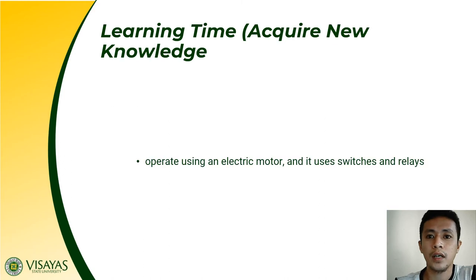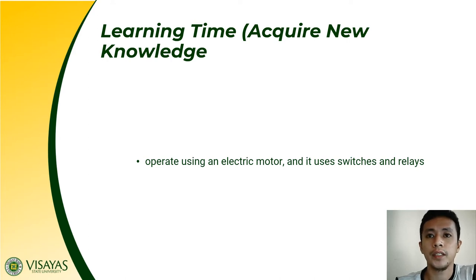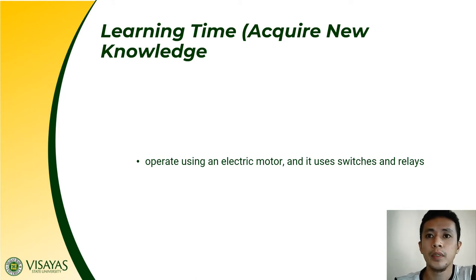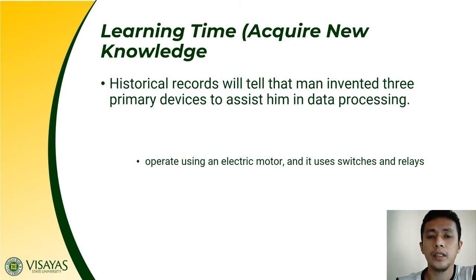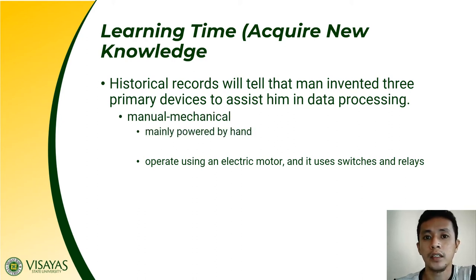Now let us start with our discussion proper. Studying the history of a computer is extremely useful in evaluating the impact and leading to even more advanced technologies. Thus, when you study the history of computers, you will be able to develop more sophisticated technologies in the future. The historical records show that man has invented three types of devices: manual mechanical, electromechanical, or electronic devices.